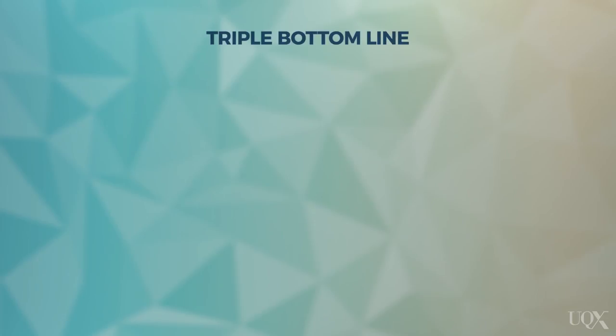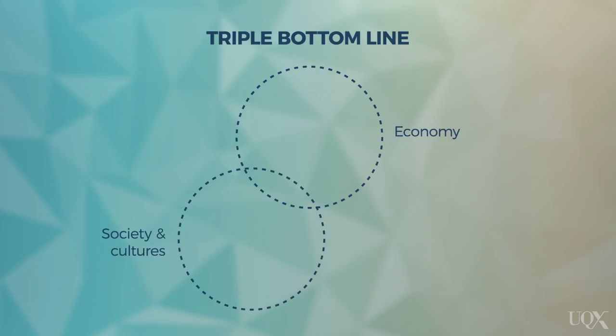The most common way to understand sustainability in the tourism context is to consider what is known as the triple bottom line. The triple bottom line is about measuring the impact of tourism on the economy, on society and cultures, and on the environment. These impacts can be positive or negative, short-term or long-term.